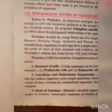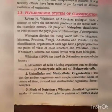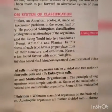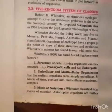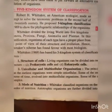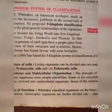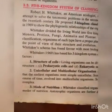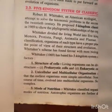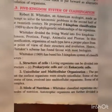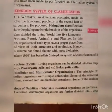5 Kingdom System of Classification: R.H. Whittaker, an American ecologist, made an attempt to solve the taxonomic problem in the second half of the 20th century. He proposed five kingdom classification in 1969 to show the phylogenetic relationship of organisms.